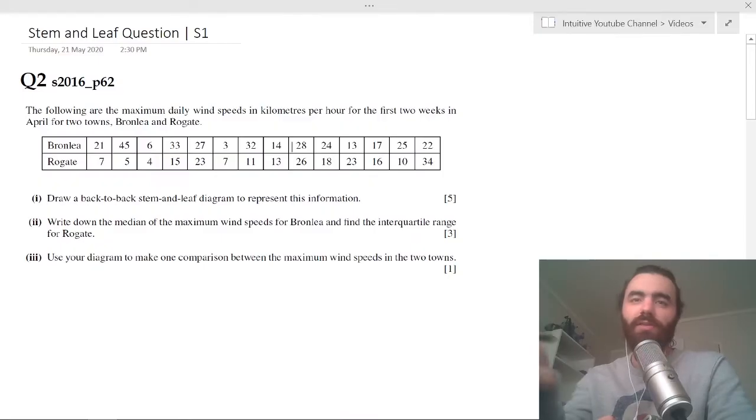Okay, so let's do a question on stem and leaf diagrams. We have the following: the maximum daily wind speeds in kilometers per hour for the first two weeks in April for two towns, Bronley and Rogate. It wants us to draw a back-to-back stem and leaf diagram to represent this information. Five marks, wow, that's a lot of marks and this is pretty simple to do.